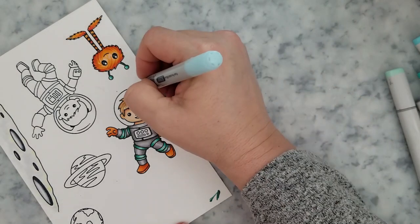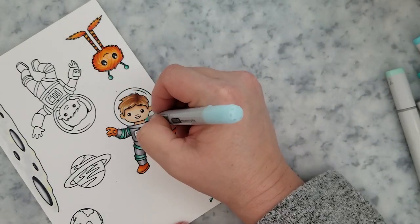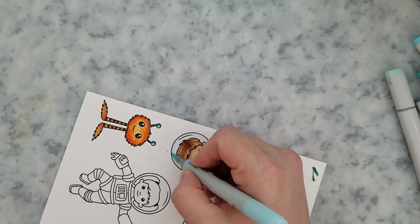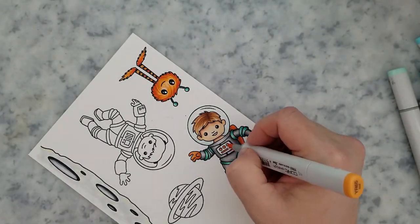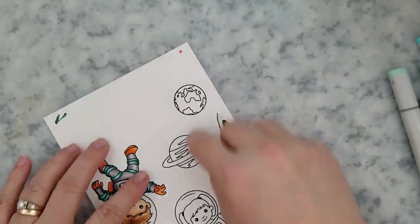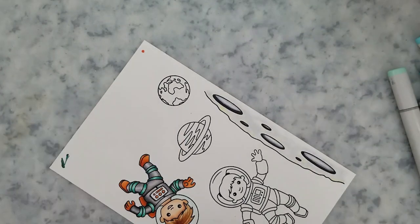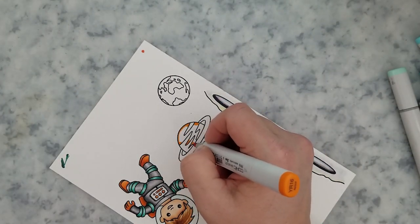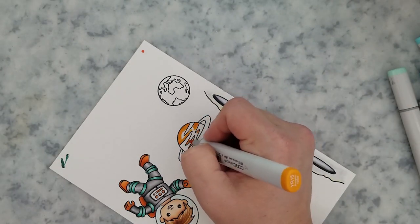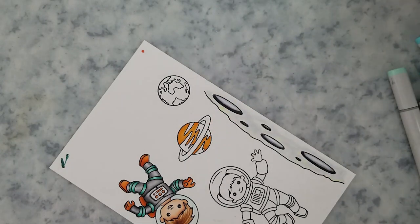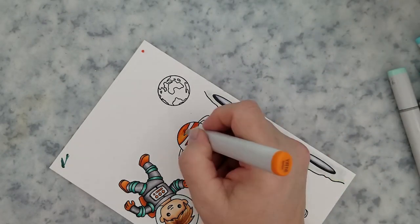So to finish him off, I'm going to come in with B000 around his helmet. And I just do a fine line around the inner part of his helmet. And then I'm going to finish off the little knobs or buttons on his chest control area there with YR68.